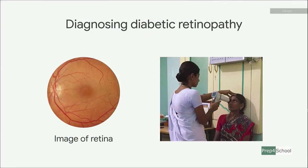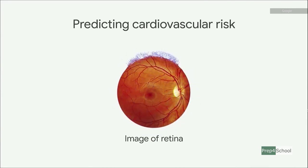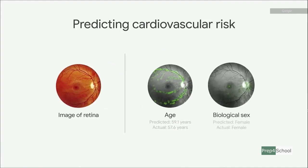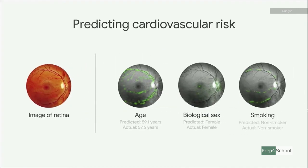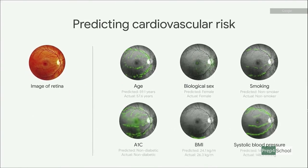It turned out, using the same retinal scans, there were things which humans quite didn't know to look for, but our AI systems offered more insights. Your same eye scan holds information with which we can predict the five-year risk of you having an adverse cardiovascular event — heart attack or strokes. More than what doctors could find in these eye scans, the machine learning systems offered newer insights.